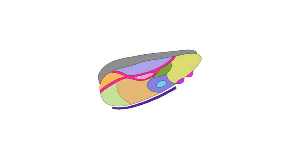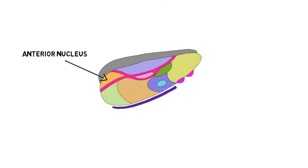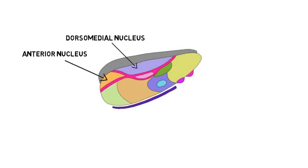I will only mention one or two of the best-known functions here. At the anterior of the thalamus is a nucleus called the anterior nucleus. It is extensively connected to the hippocampus and is thought to be involved in memory. The dorsomedial nucleus is thought to be involved in emotional behavior and memory.